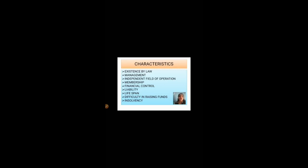Third, independent field of operation — the senior most person of the family, known as Kartha, manages everything and is free to take all decisions. All the other family members can help him but they cannot go against him. Fourth, membership — one can acquire membership in this HUF by birth only. Fifth, financial control — all the financial control rests with the Kartha, the senior most person of the family.